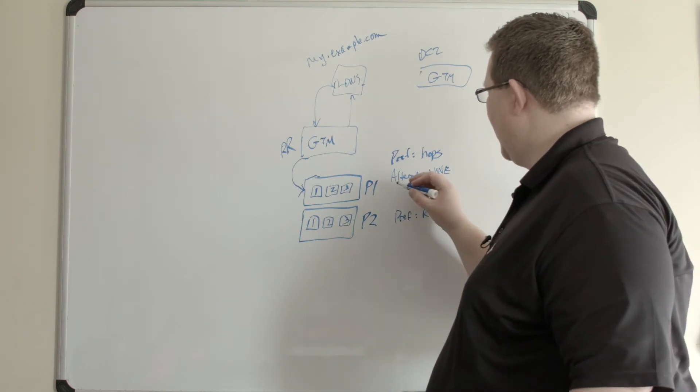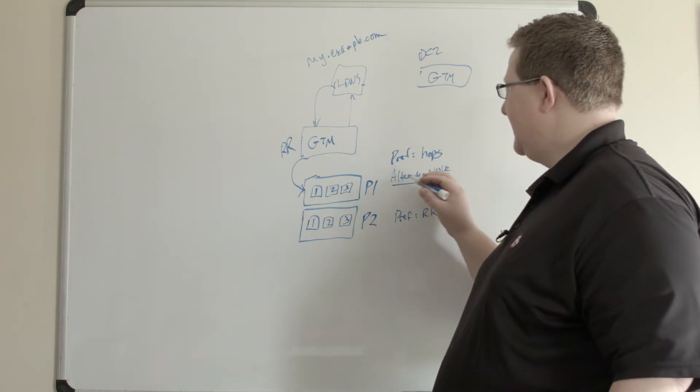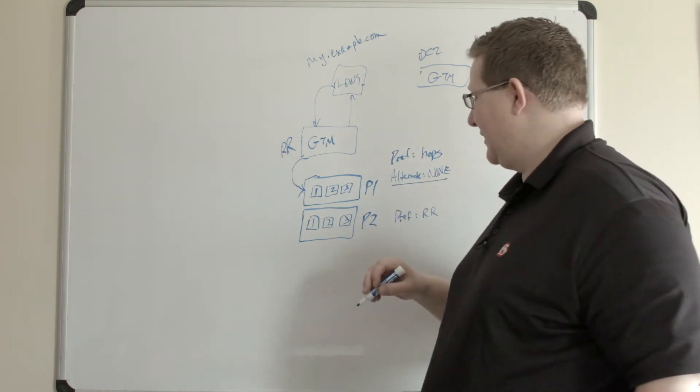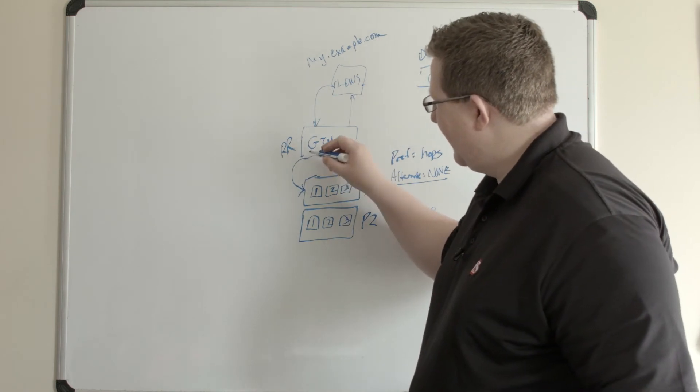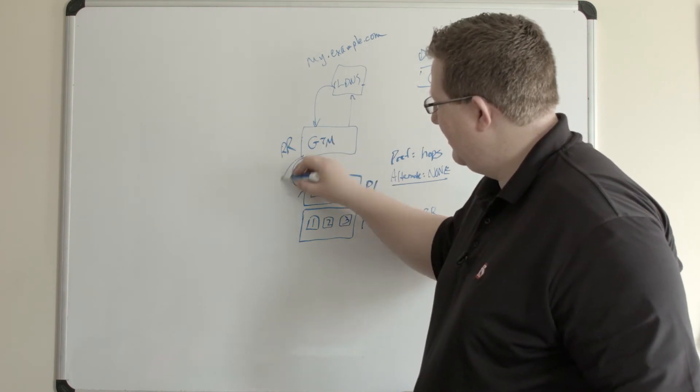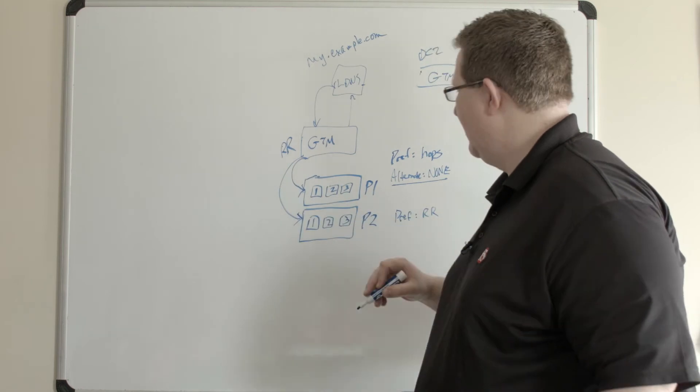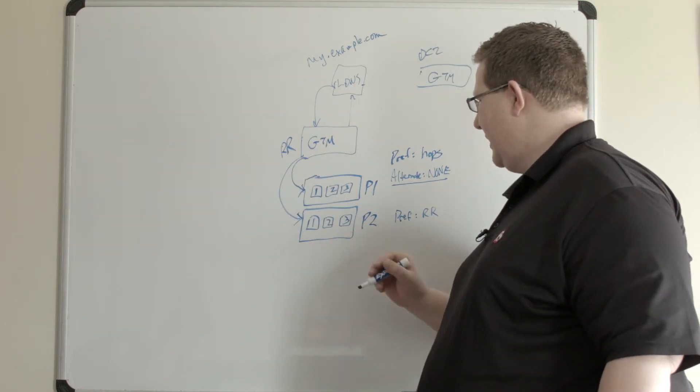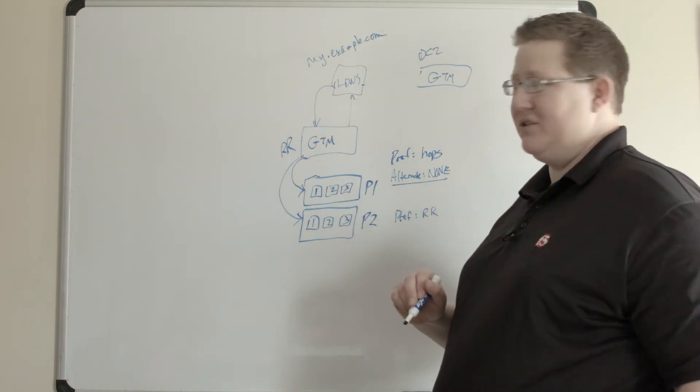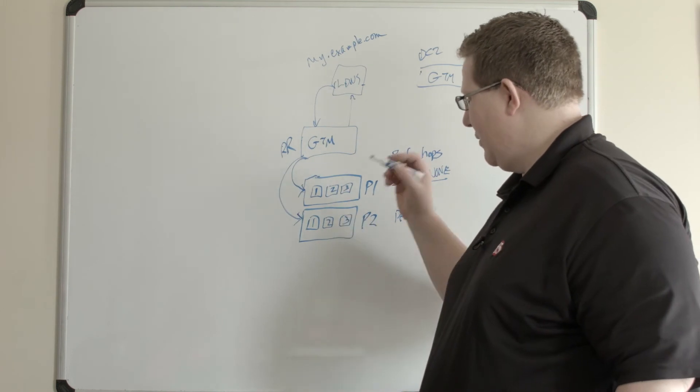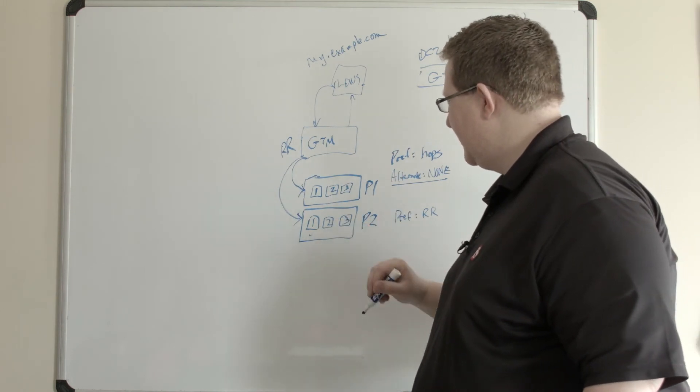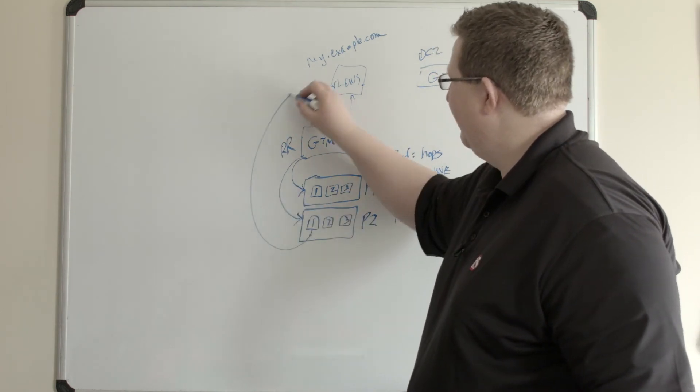What happens with the alternate of none is it instructs GTM to go ahead and go to the next pool. Because that is none, it'll come down to the next pool and my preference is round robin, so it's just going to pick one of these servers, say one, and that VIP is going to be returned to the LDNS.